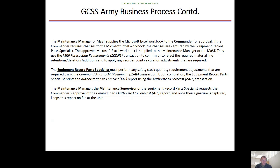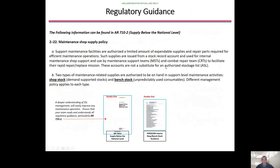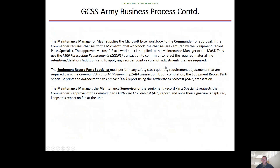For example, if the reorder point is set at 27 and the commander determines it was a one-time fluke and doesn't want to stock 30 of those items, he can adjust that through the ZSAF transaction. Then you'll run the ZATF transaction, and the maintenance manager, supervisor, or ERP requests the commander's approval. Everything you do requires the commander to sign off — this is important to file, especially for the AIME. Inventories also need to be signed by the commander.